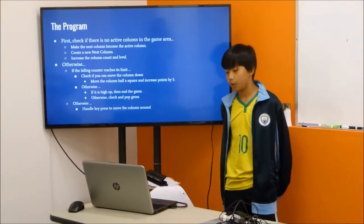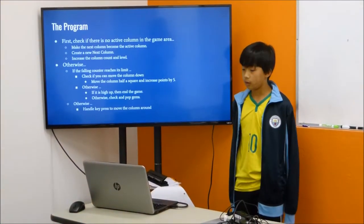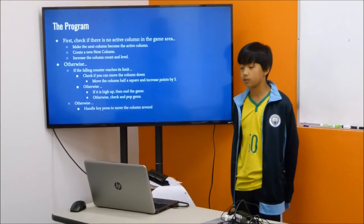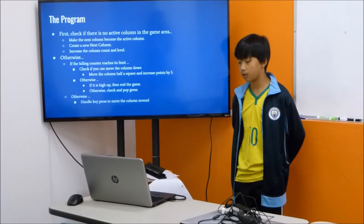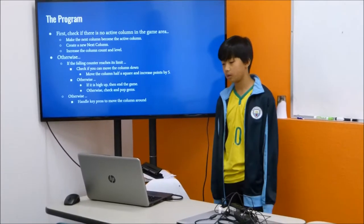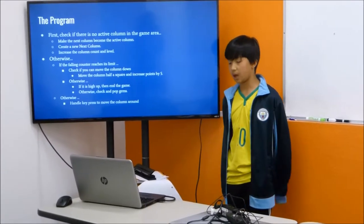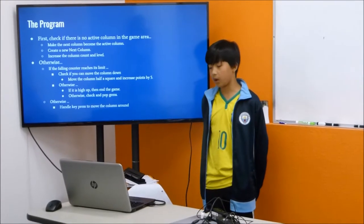First, you check if there's an active column in the game area. Make the next column become the active column, and then you create a new next column. Then you increase the column count and level.